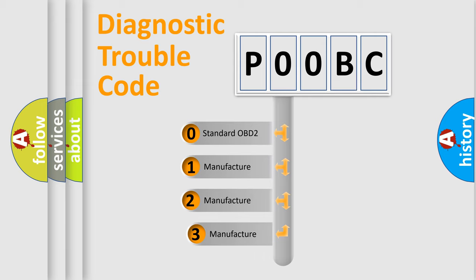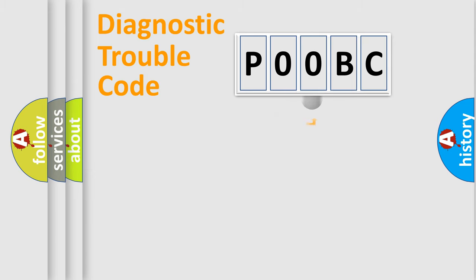If the second character is expressed as zero, it is a standardized error. In the case of numbers 1, 2, or 3, it is a manufacturer-specific error.